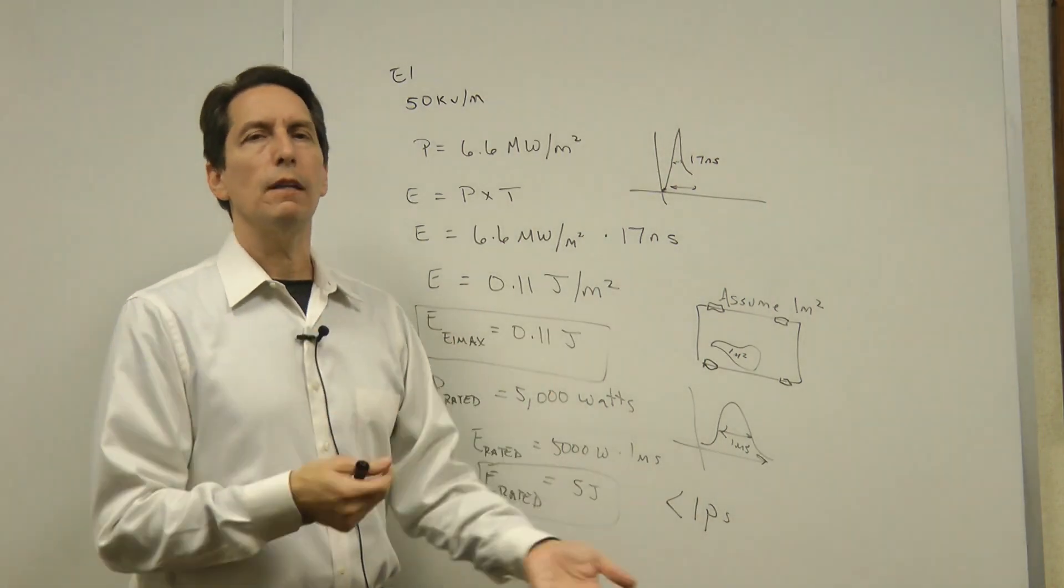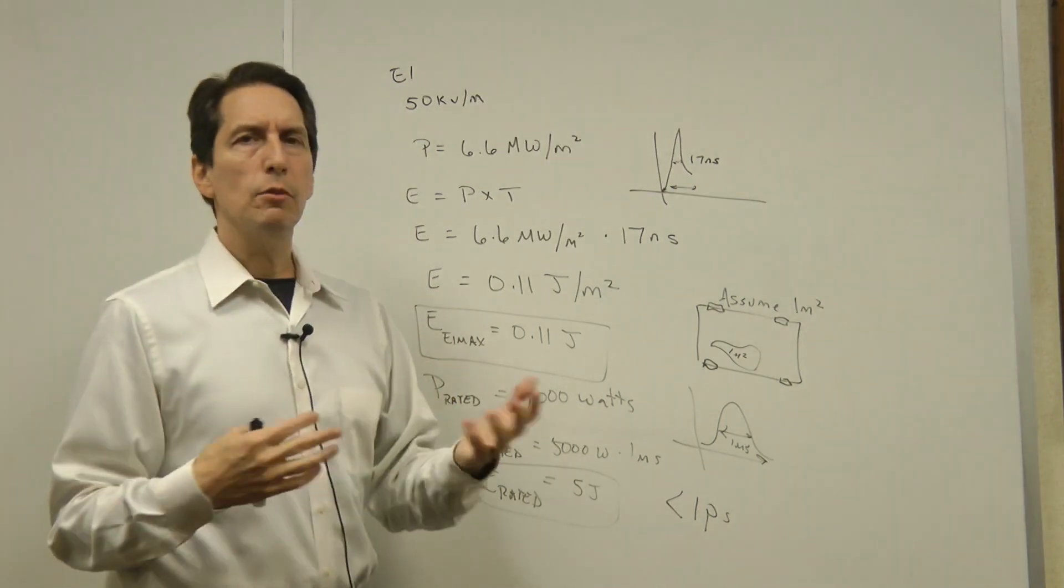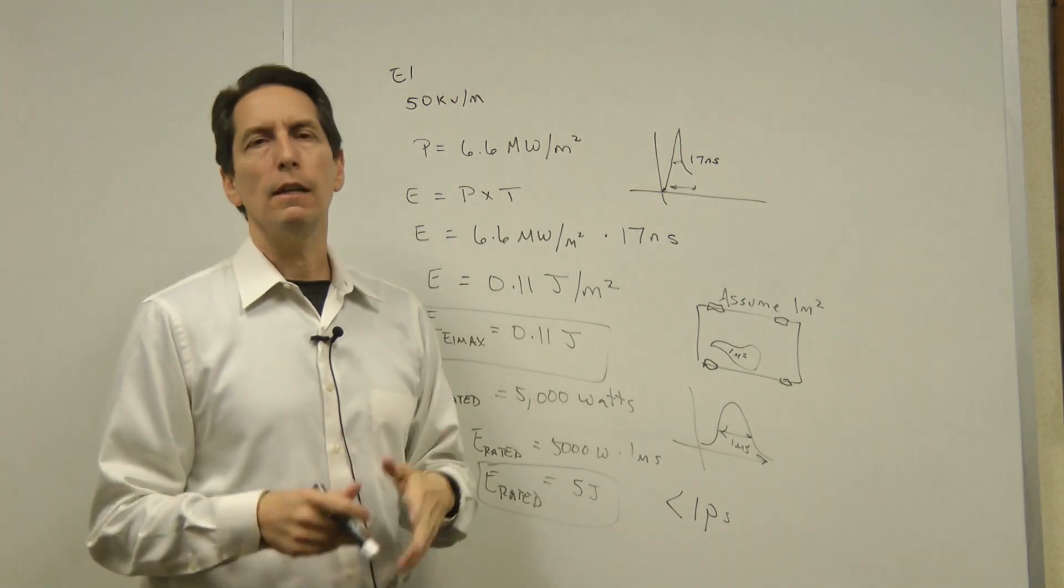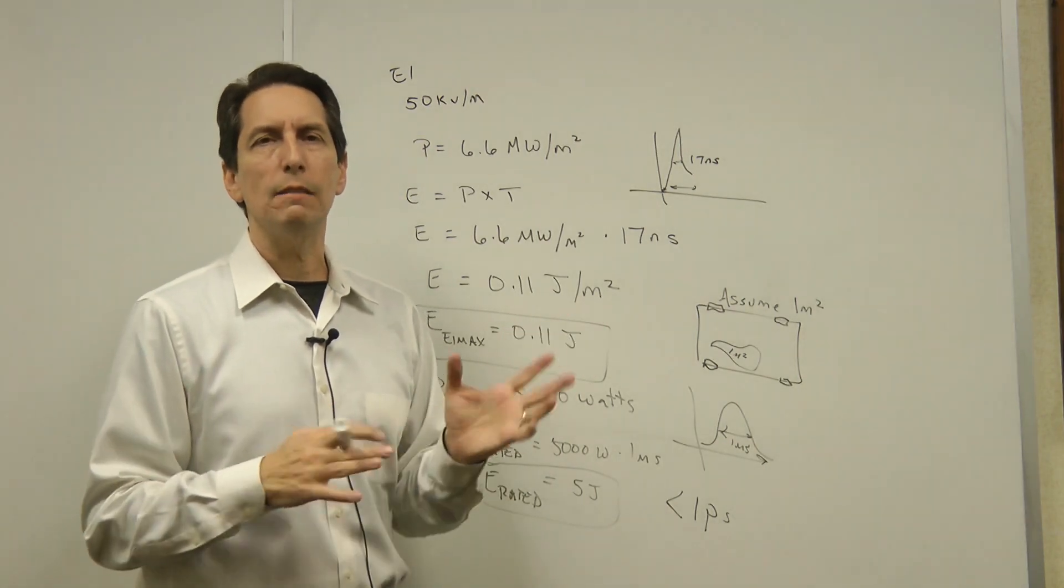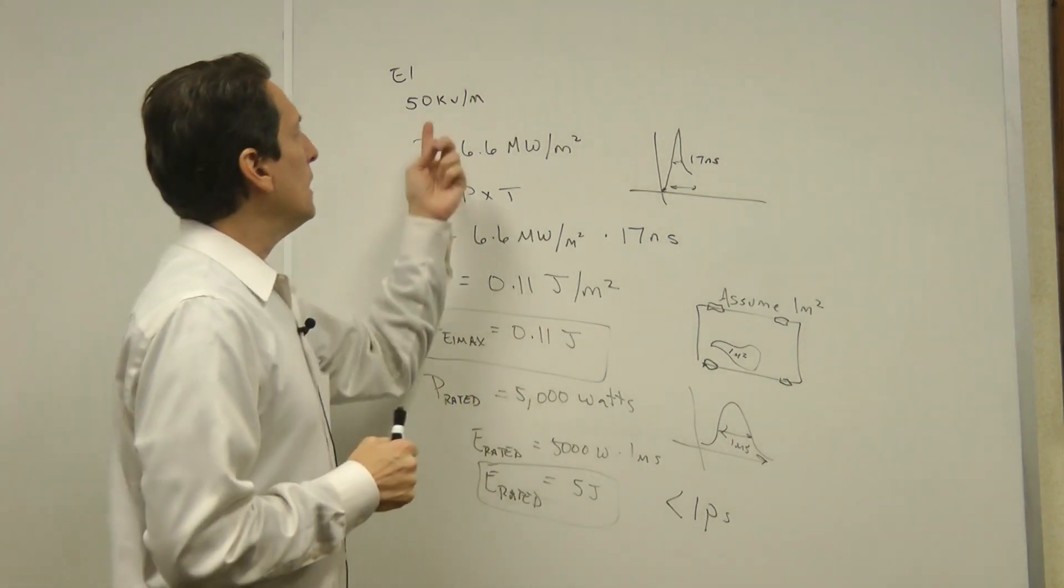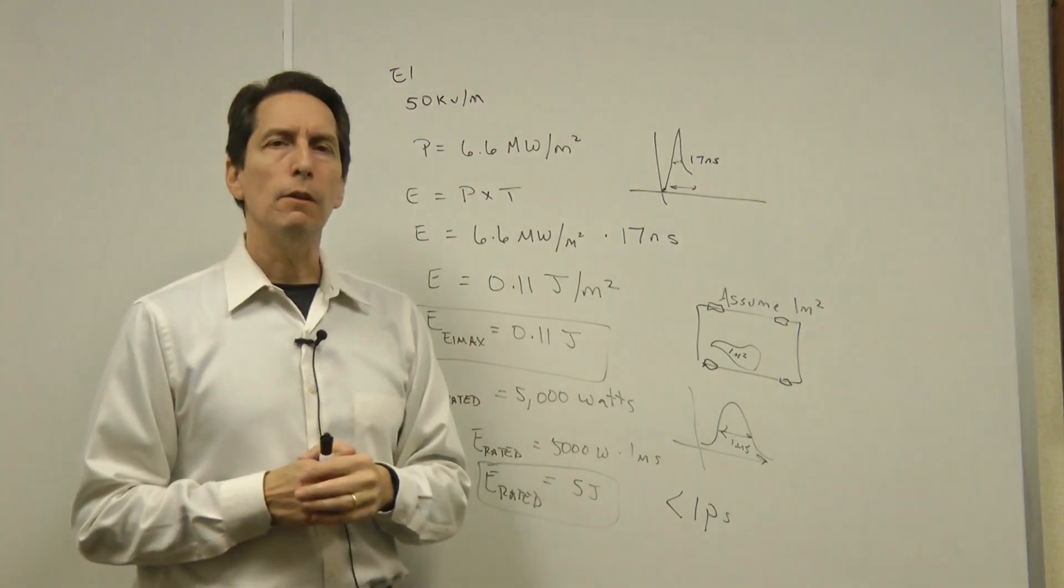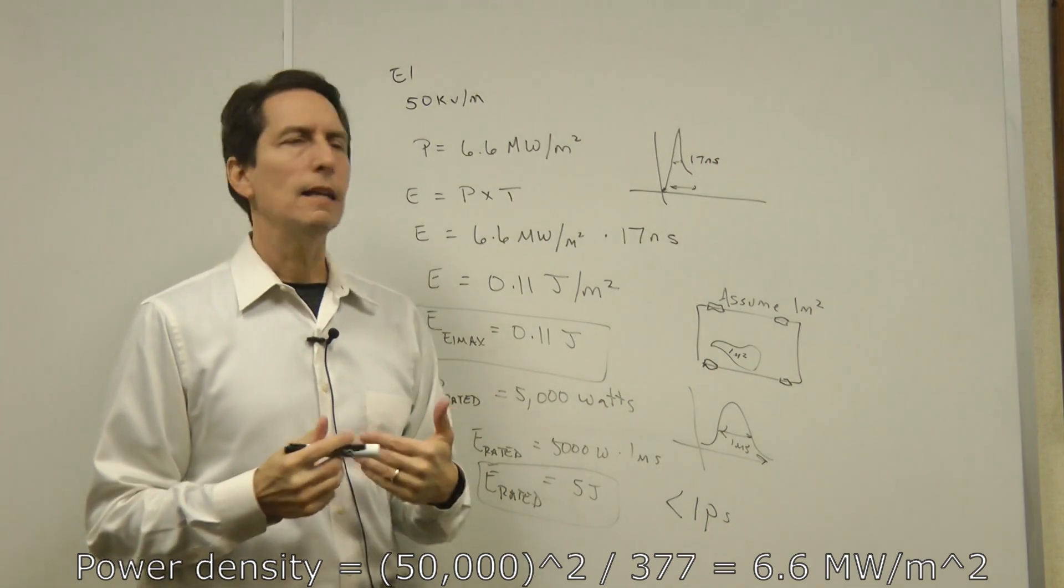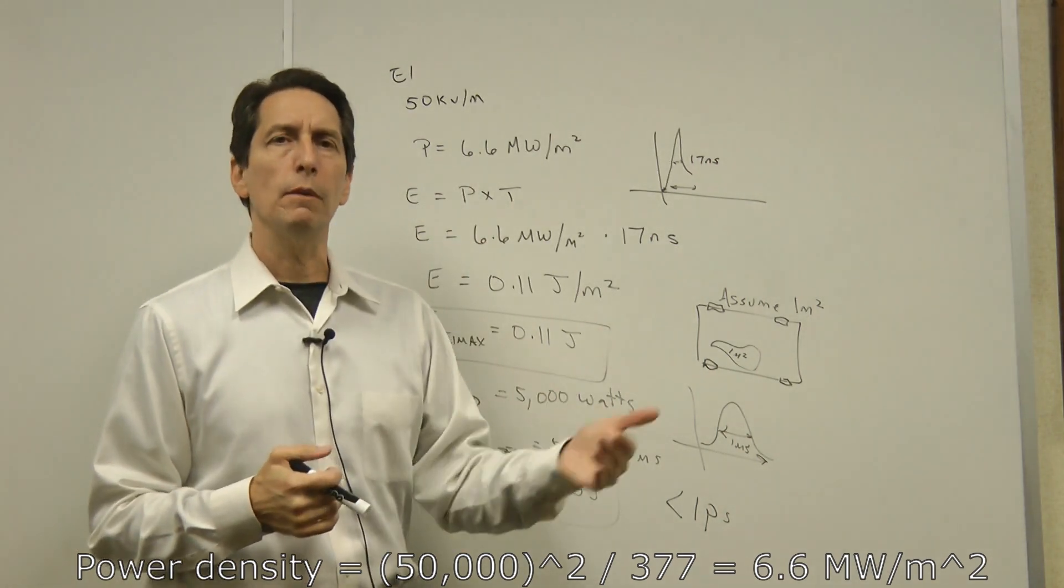A place to start might be by first talking about what the E1 would generate at the surface. And a well-established number that a lot of people use is that it could generate fields as high as 50,000 volts per meter. Now, you can argue over whether that number's right or not. It doesn't matter much for our calculations. If you take that 50,000 volts per meter and you go through some calculations, what you find is that the power that corresponds to that is on the order of 6.6 megawatts per square meter.